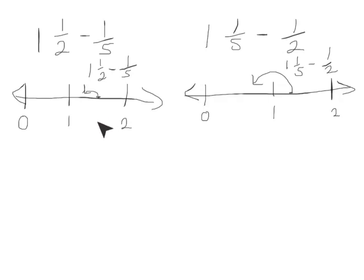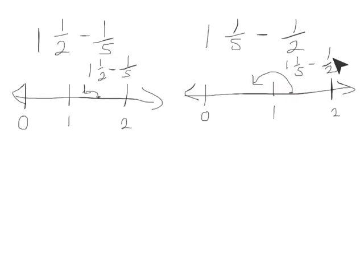Using the number line, we can see that if we start at 1 and 1 half and take away 1 fifth, since 1 fifth is a smaller fraction than 1 half, our answer is still greater than 1 — we'll get a mixed number, 1 and something. If we start at 1 and 1 fifth and take away 1 half, since 1 half is greater than 1 fifth, our answer will be less than 1.